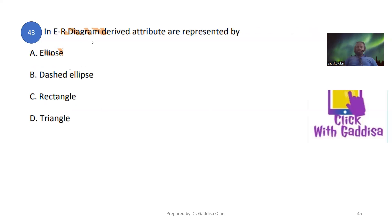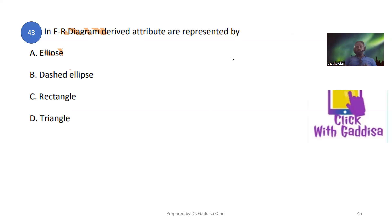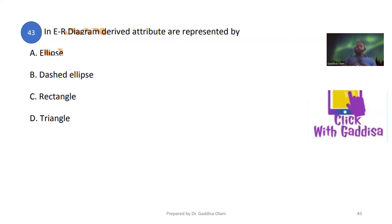In an ER diagram, derived attributes are represented by a specific notation. In the ER diagram, entity is represented by a rectangle. Attributes are also represented — there is a strong attribute notation.